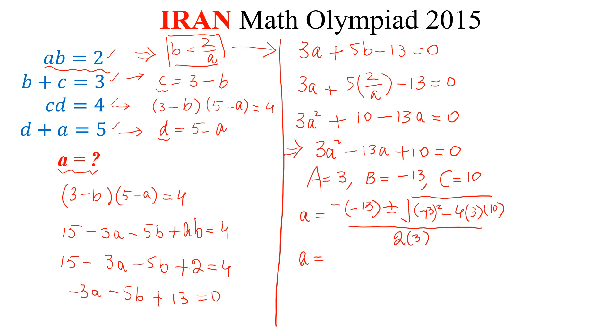Simplify it and we get 13 plus minus square root of 169. 13 squared is 169. 4 times 3 is 12. 12 times 10 is 120. So, square root of 49 is 7, divided by 6.